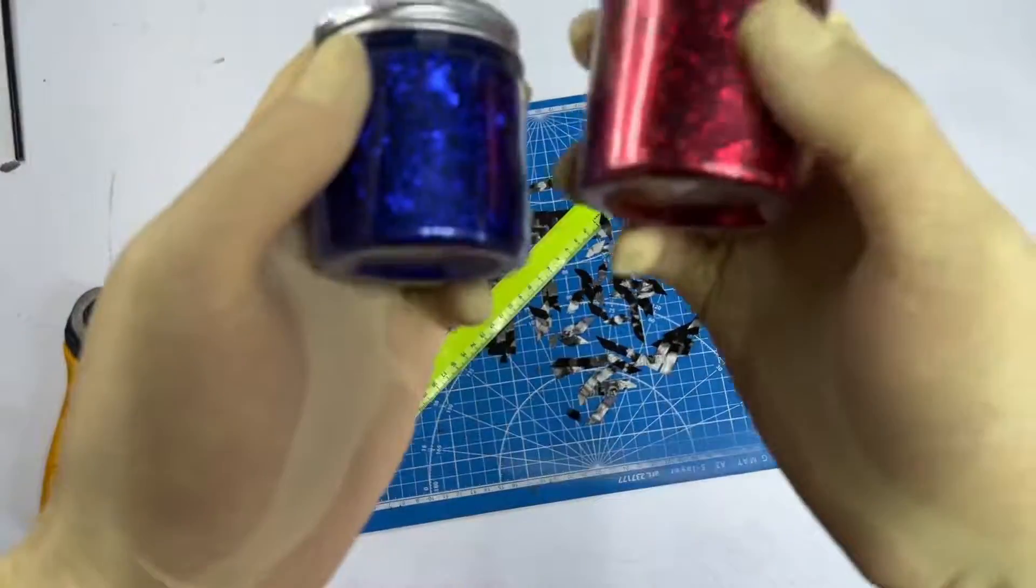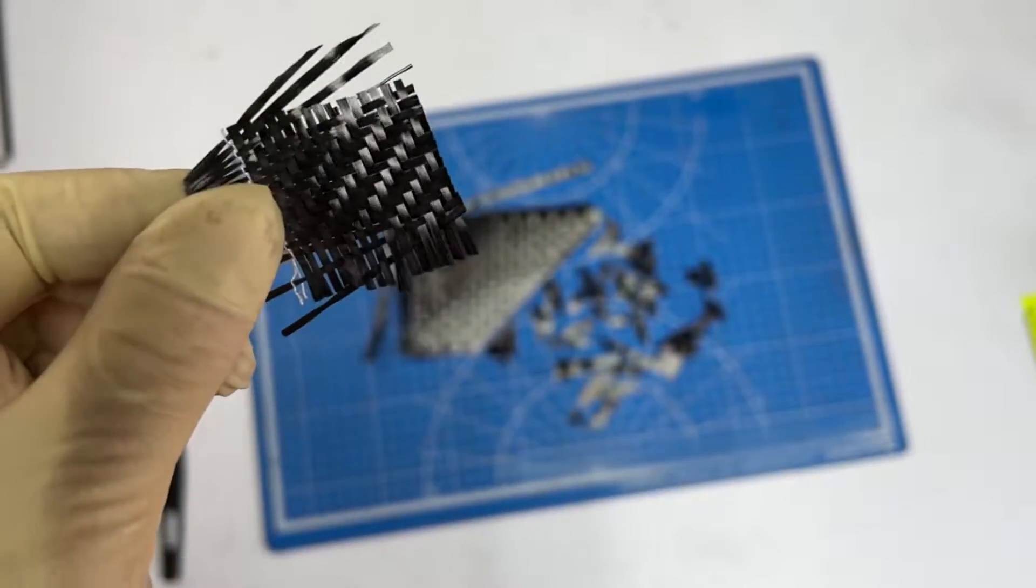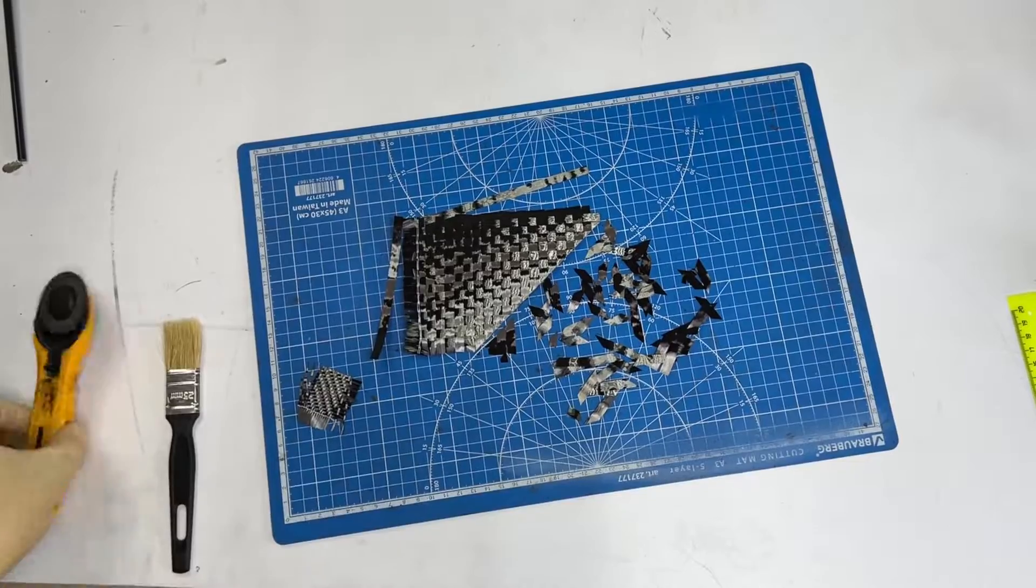Also, you can add aluminum foil flakes of different colors to a part. Feel free to experiment and don't hold back your imagination.